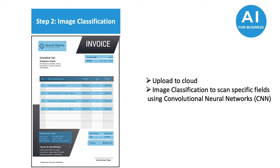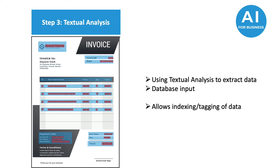Then, using image classification, it is scanned to detect item fields using convolutional neural nets. As you can see in the image, the blue boxes are the fields that are of interest — they state the description, invoice number, subtotal, etc. Once the fields are analyzed and the headers are created, textual analysis can be used to extract the text from the document before being uploaded to the database. As you can see in red, the key data that is of interest is extracted to the database.